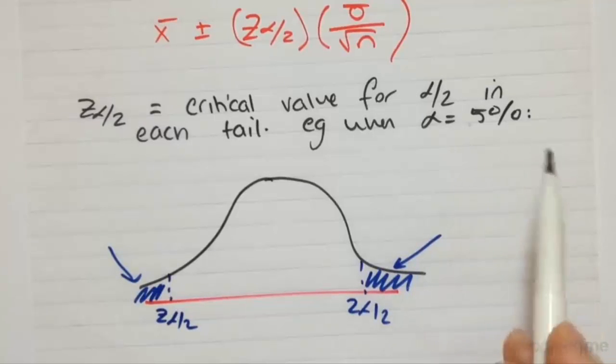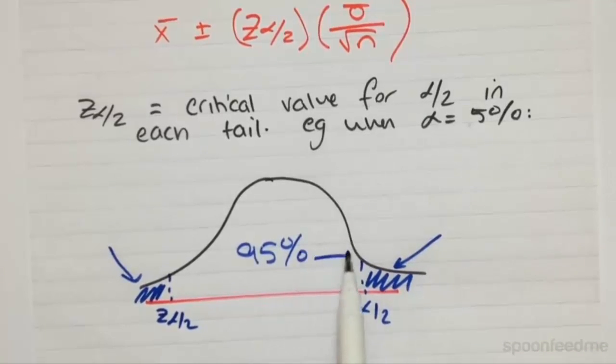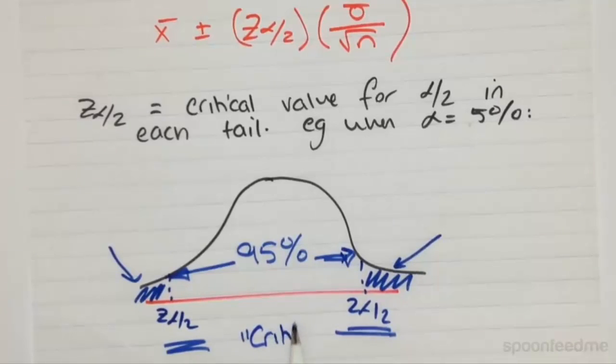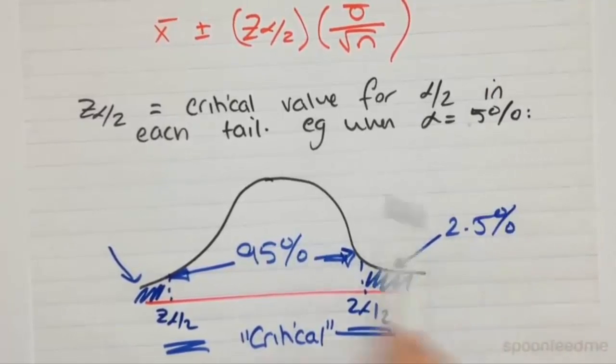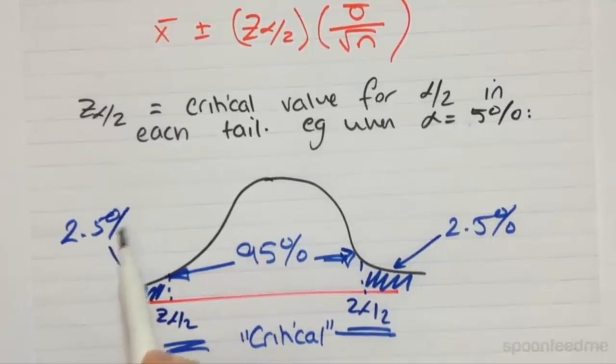So if we're looking at a 95% confidence interval, so 95% of population mean values will lie within these two Z statistics, which are known as our critical Z statistics, and they will leave 2.5% in either tail if we are looking at a 95% distribution of potential values for population means.